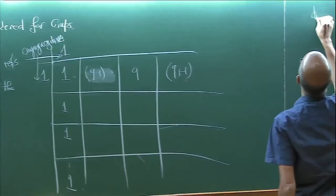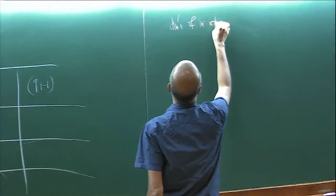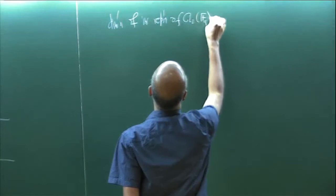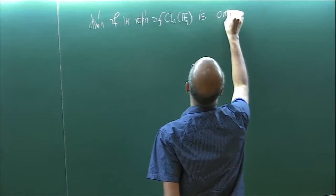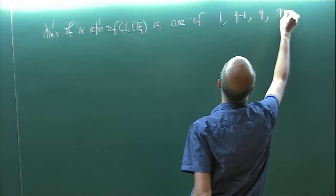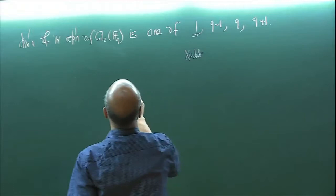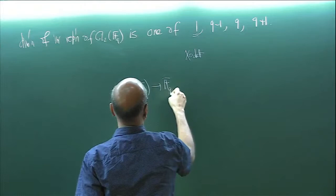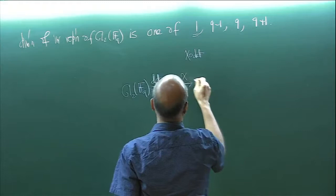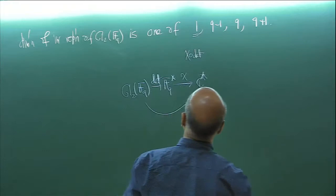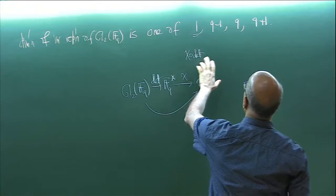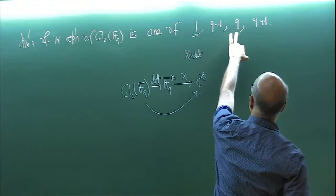The dimensions of irreducible representations of GL2(Fq) are 1, q−1, q, and q+1. The dimension-1 case is the trivial representation, or more precisely, characters of the form χ composed with the determinant: GL2(Fq) has the determinant mapping to Fq*, and if you are given a character χ from Fq* to ℂ*, this constructs a one-dimensional representation, and these are all the one-dimensional representations.